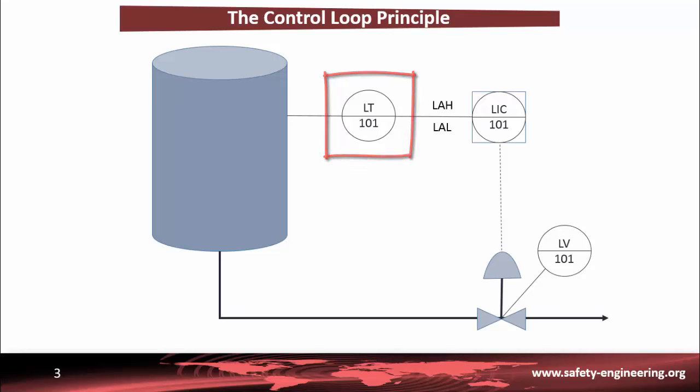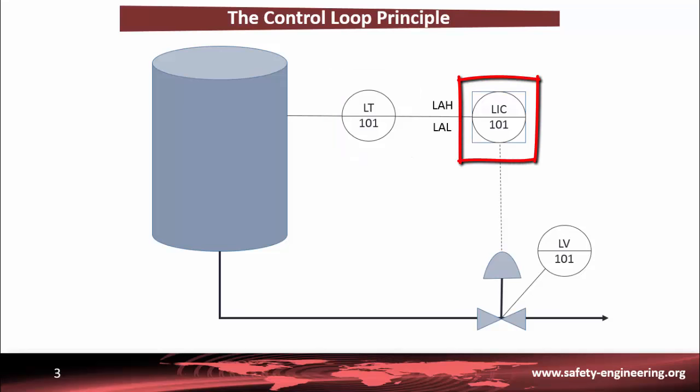The signal is sent to an LIC controller. The controller compares this measurement with the value one wants to maintain the controlled variable at, and adjusts the manipulated variable which has a direct effect on the controlled variable. The manipulated variable in this case is the flow rate at the output of the tank.